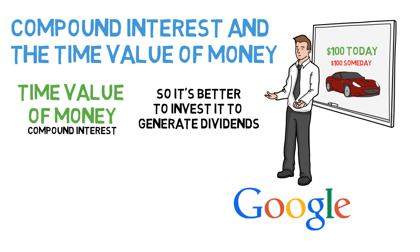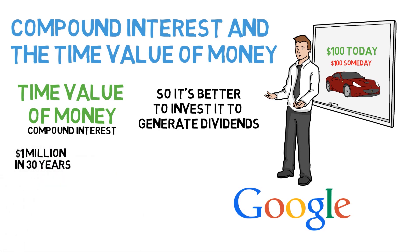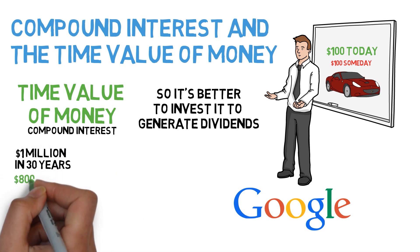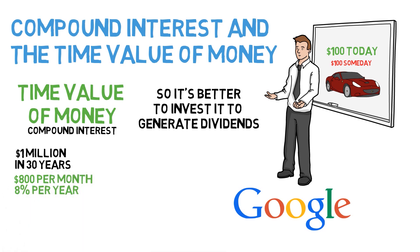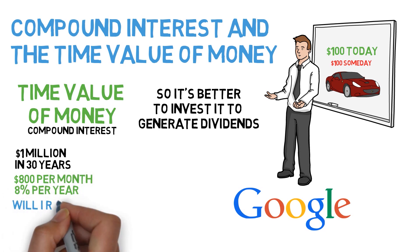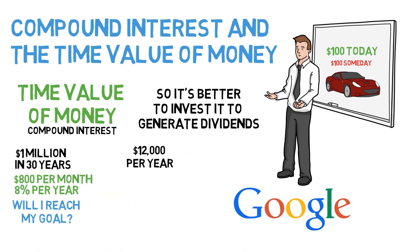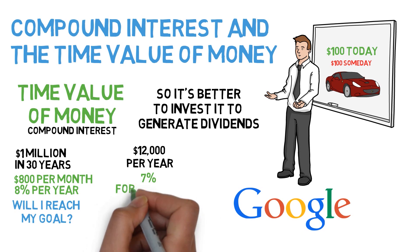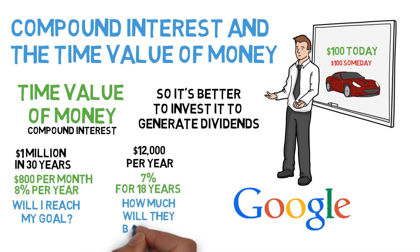You can use Google to learn about the time value of money. You'll find formulas that show you how to calculate compound interest. This will empower you to answer questions such as: if I need $1 million for retirement 30 years from now, and I can save $800 per month and earn 8% per year on my investments, will I reach my goal? Or: I'm putting $12,000 per year into variable annuities that I expect to earn 7% for 18 years — how much will they be worth when I'm ready to cash out?